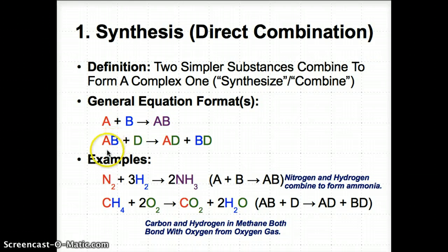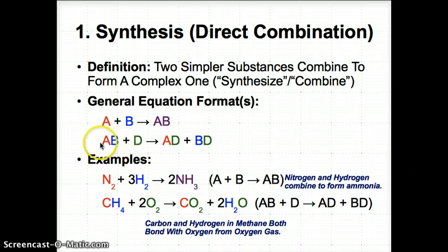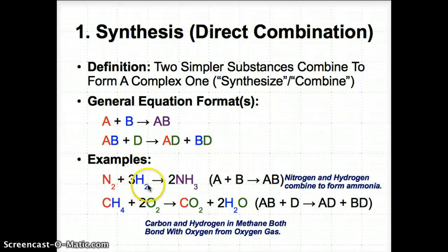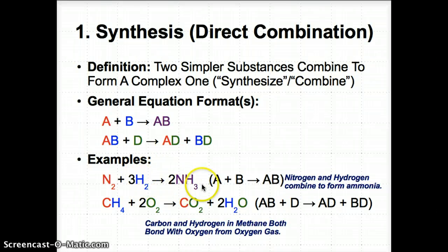You can also have AB + D, where both A and B react with D to form AD + BD. An example is N2 + 3H2 → 2NH3, following A + B → AB, where A is N2, B is H2, and AB is NH3. In words: nitrogen and hydrogen combine to form ammonia — two simple things combining to form a more complex one.